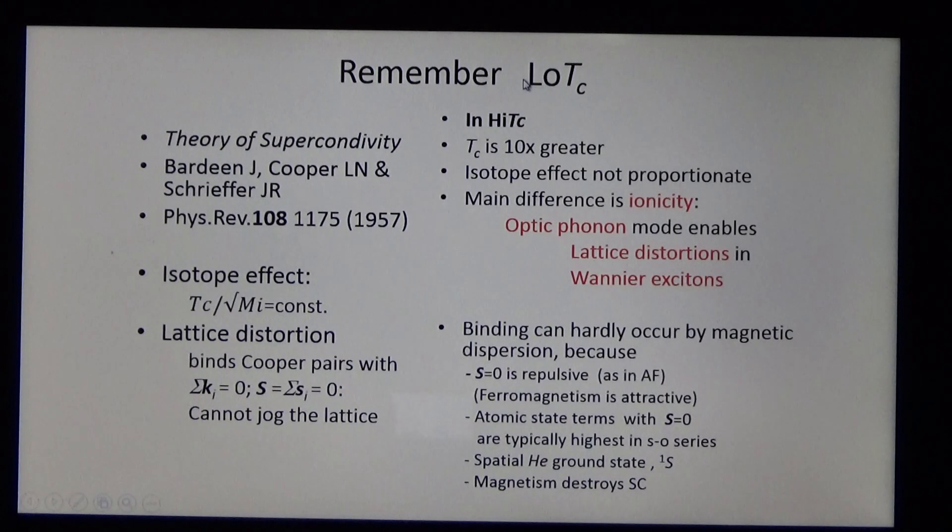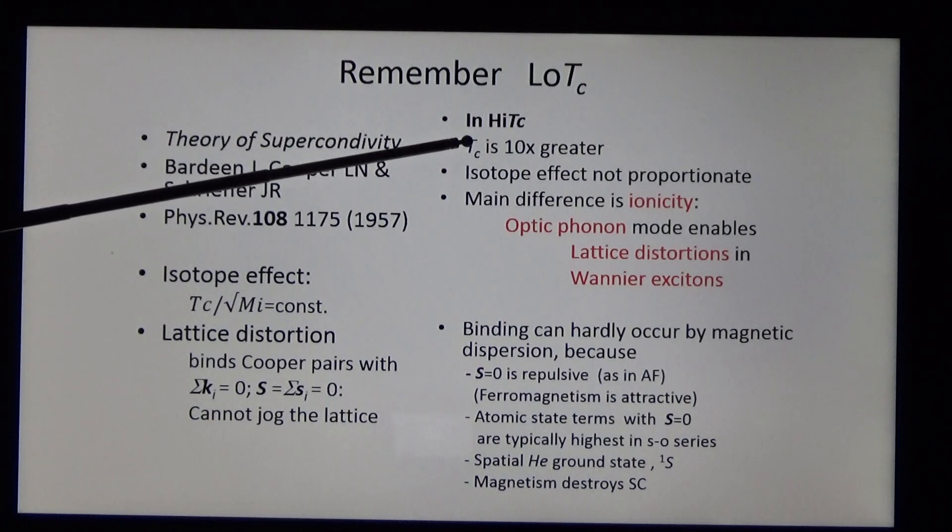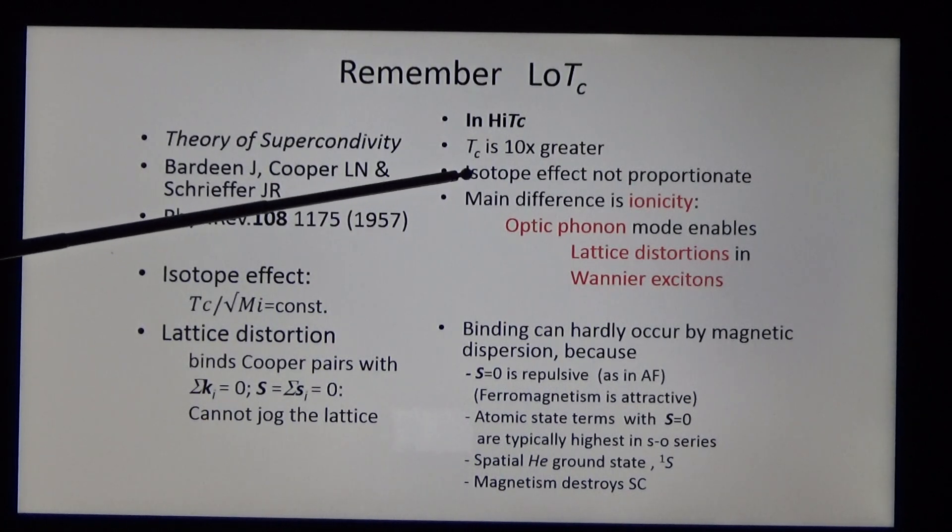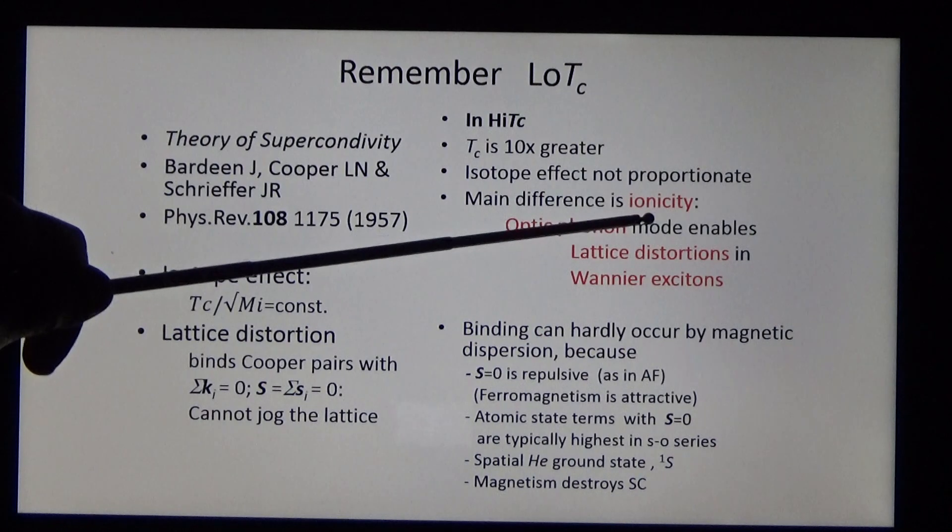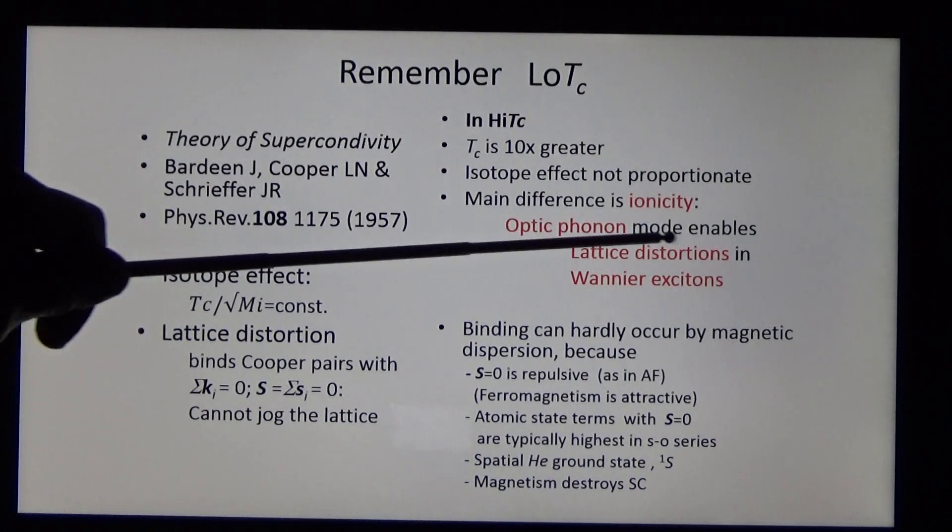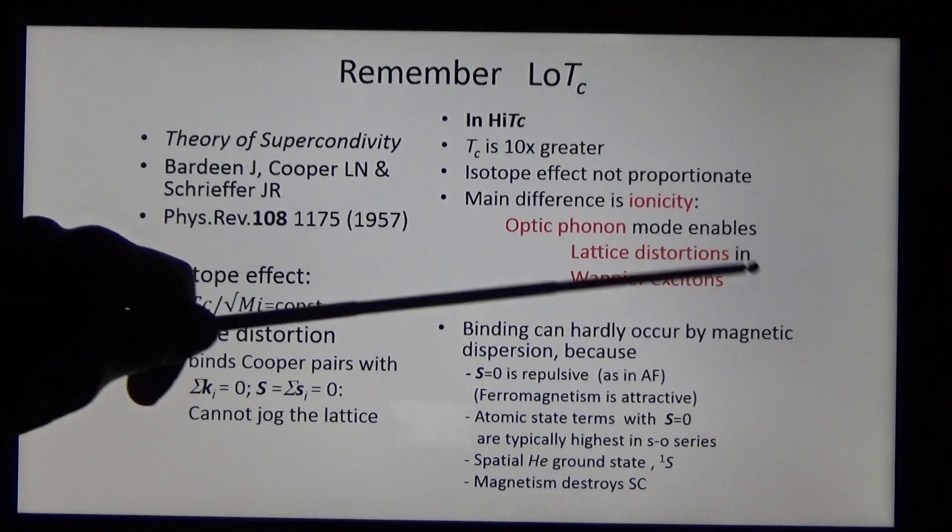Subsequently, high temperature superconductivity was discovered with a critical temperature an order of magnitude greater, but not proportionate isotope effect. An explanation is therefore needed. The main difference is ionicity in the ceramic compounds. This allows optic phonon modes to produce lattice distortions with Wannier excitons.